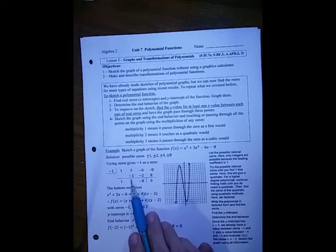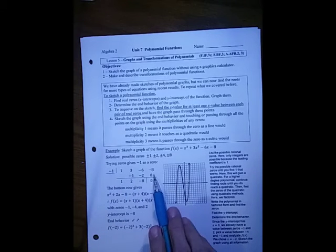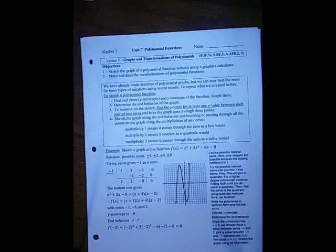Bring down the 1, multiply those, write that down. Add, multiply, write it down. Add, multiply those, write it down. And then add 0, of course, confirms that it is a zero. The bottom row, x squared plus 2x minus 8, is x plus 4 times x minus 2.